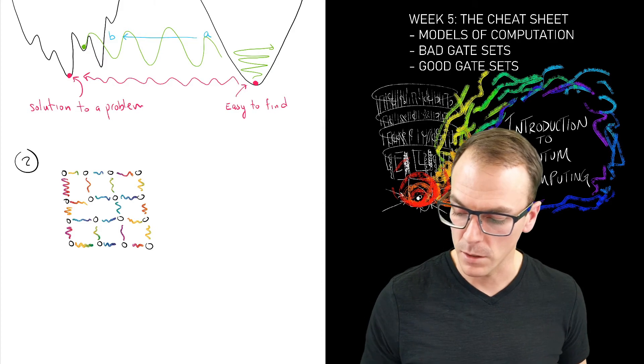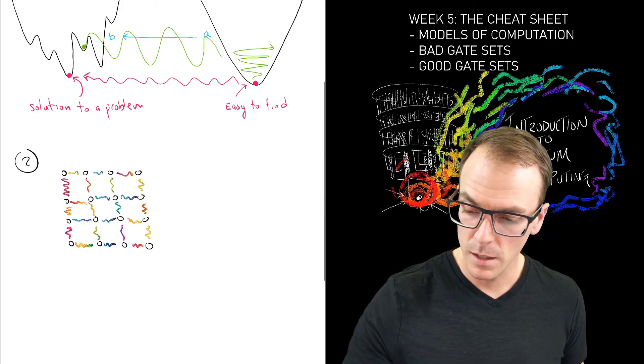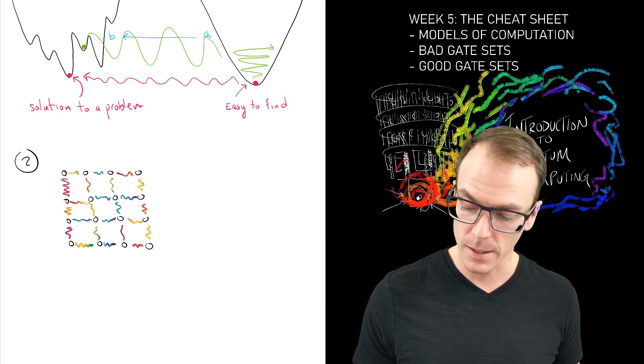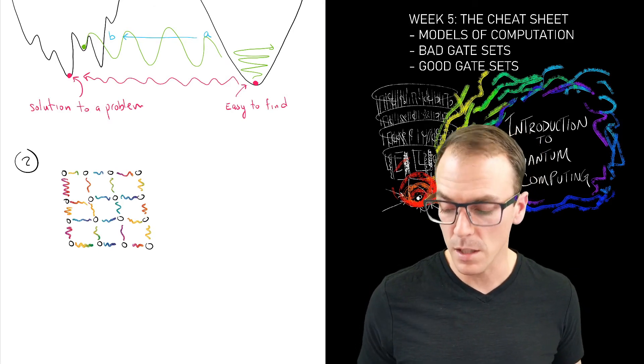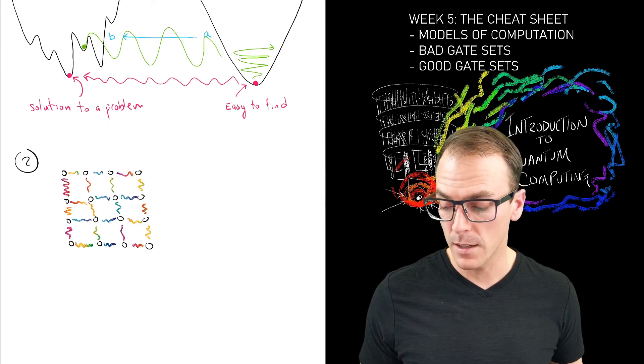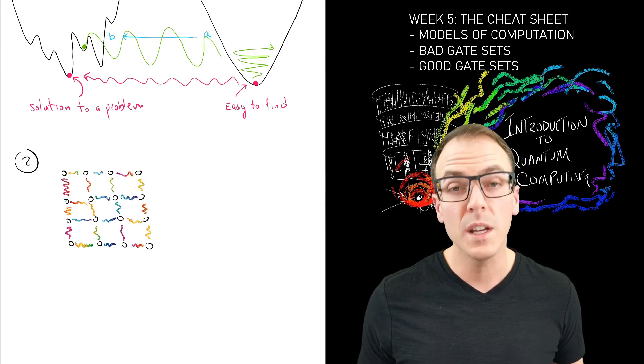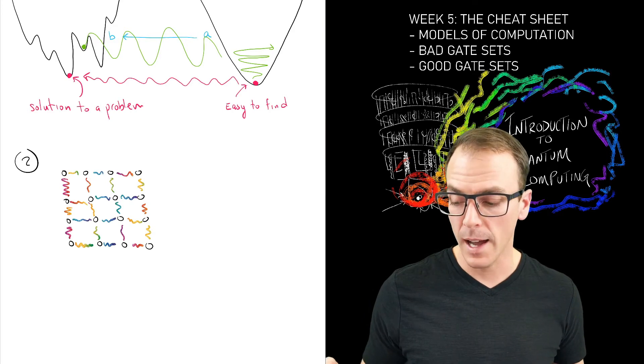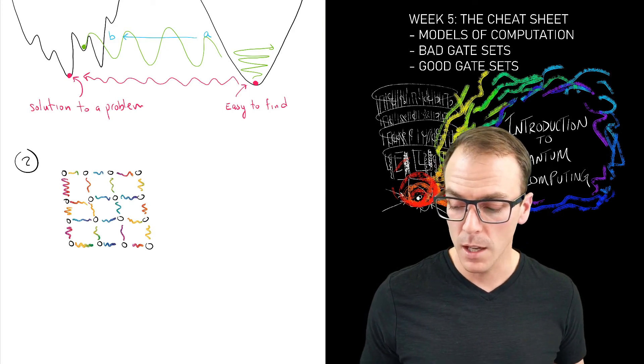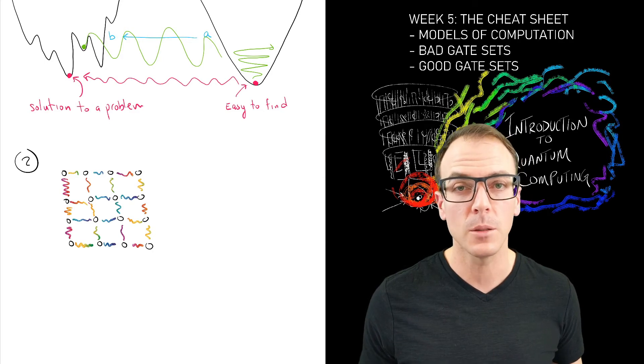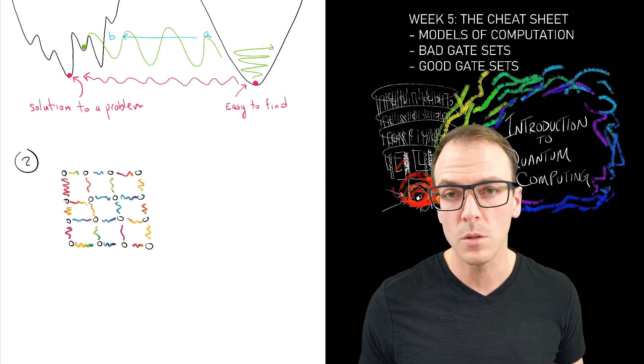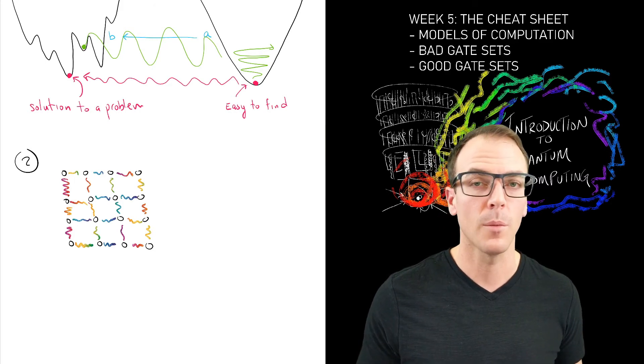Anyway, you can write down a specific entangled state such that all of these qubits are correlated, and that is a resource state. So the action of computation is something quite simple. It's just single qubit measurements, and the measurements themselves, which ones you do, depend on the results of previous measurements.